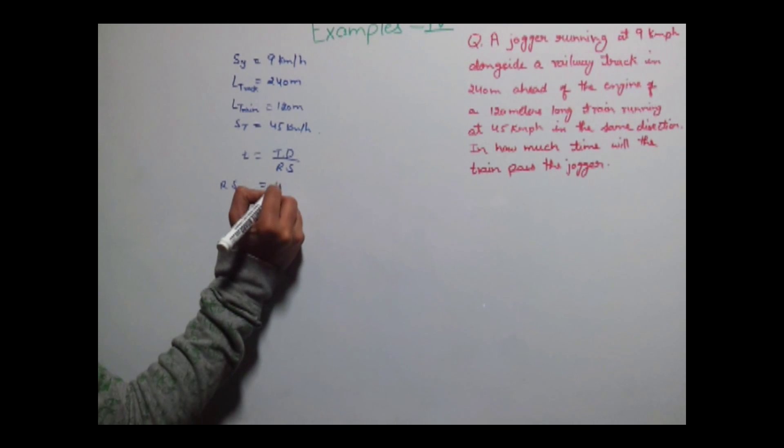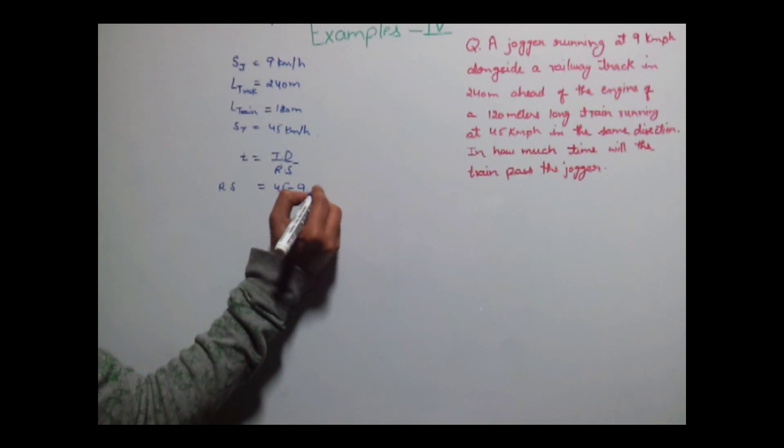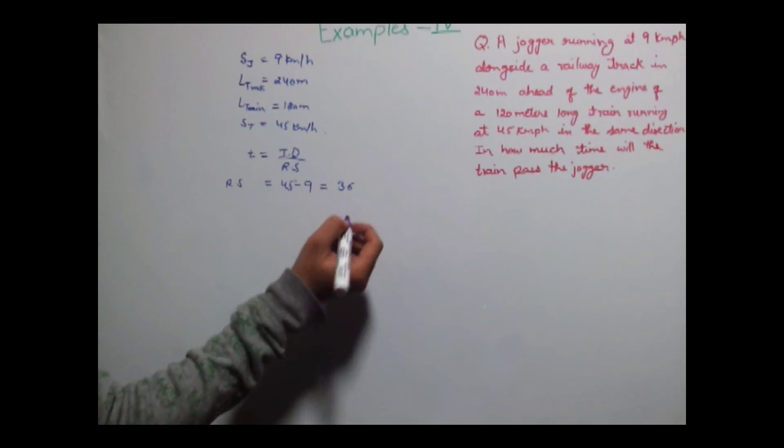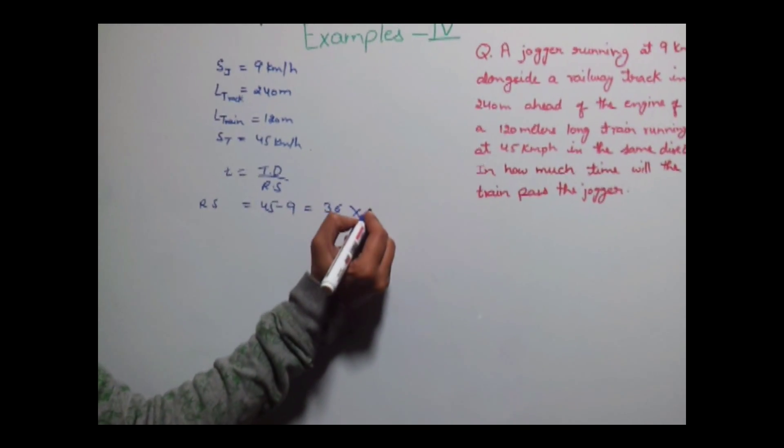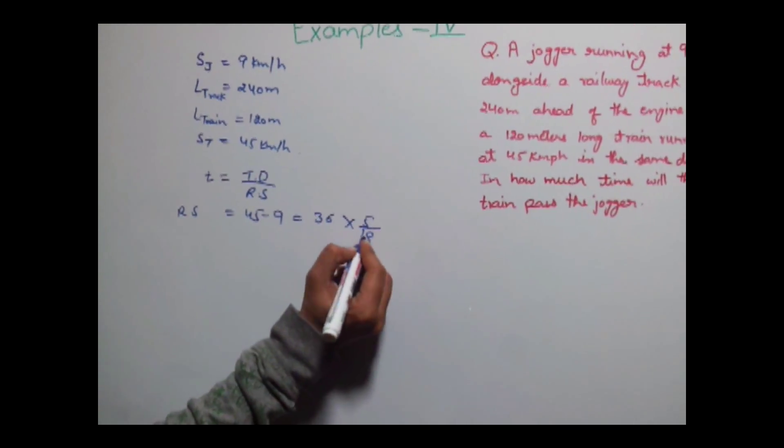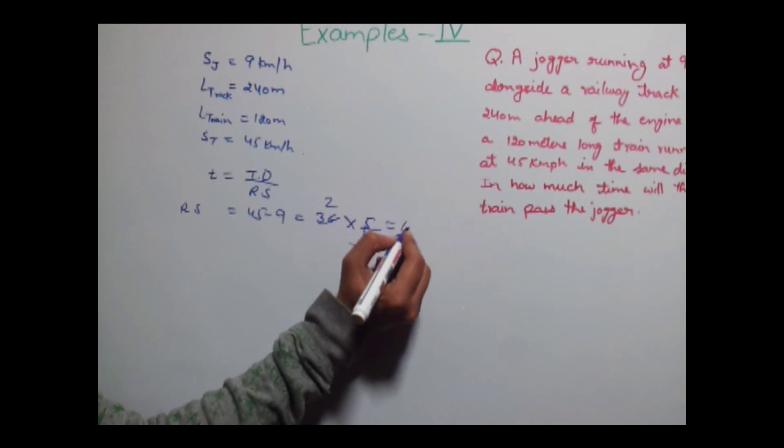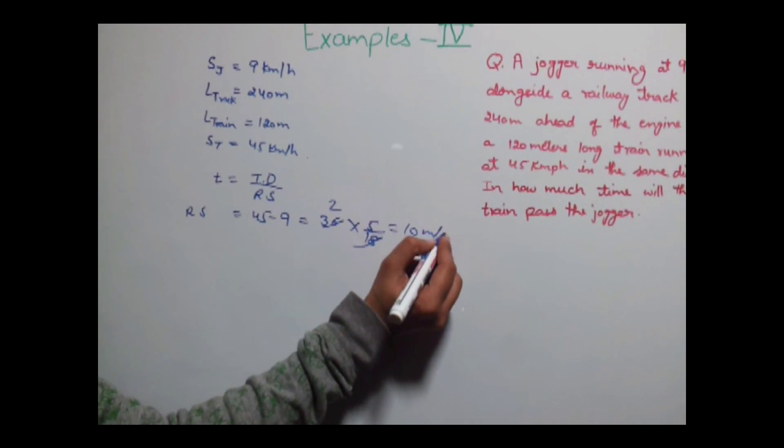So relative speed would be equal to 45 minus 9 which is equal to 36. To convert this into meter per second, multiply by 5 divided by 18 that is 10 meters per second.